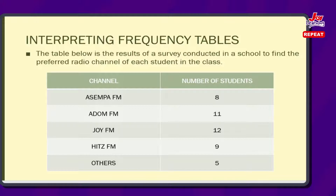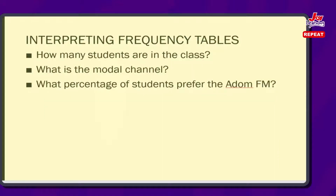So, it can be your school — we came to your class and we conducted a survey from your students to find out which radio channel they preferred. The table we see on the screens is the result from that survey. For Asempa FM, eight students said they preferred it. Adom FM had 11 students. Joy FM had 12 students. Hits FM had 9. And then others — other radio channels — had 5 people. We want to see how we can use this data to analyze it, interpret it, and make meaningful understanding from it.